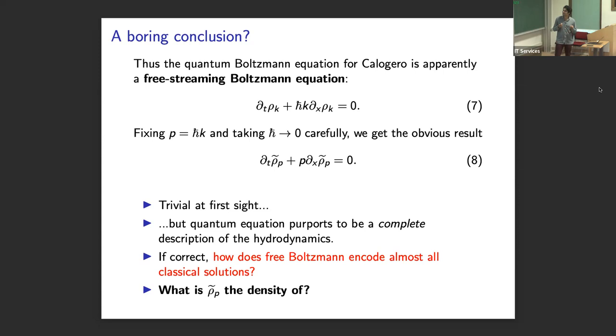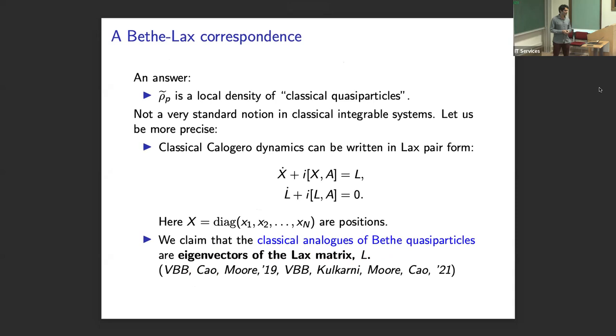So one question is, what is rho p actually a density of? What is this parameter p that's appearing here? And how can such a simple equation give a complete description of the local equilibrium dynamics? Because if it's really describing the finite temperature dynamics of the system, it has to somehow capture almost all of the classical excitations in measure. Otherwise, it wouldn't be describing finite temperature dynamics.